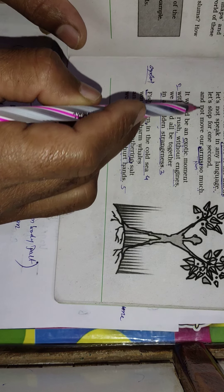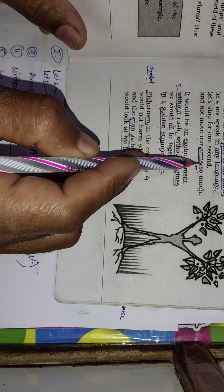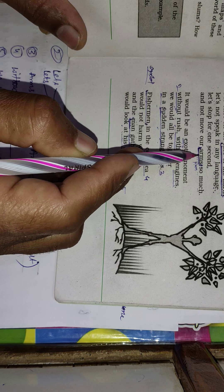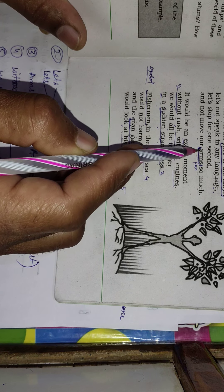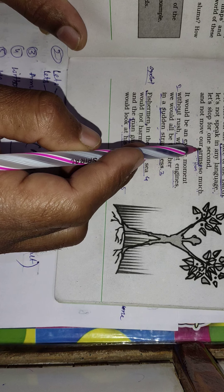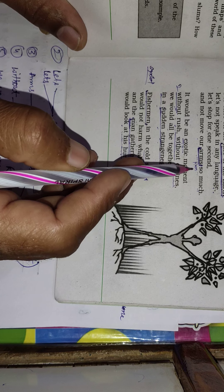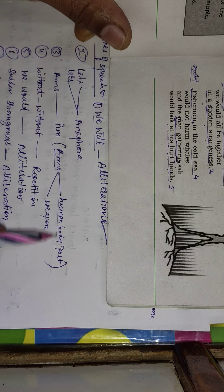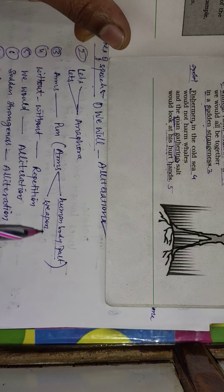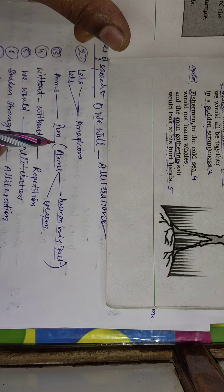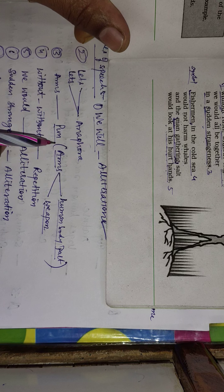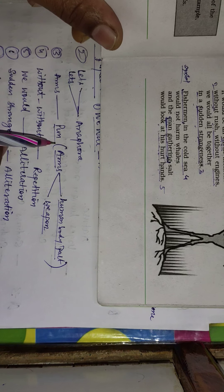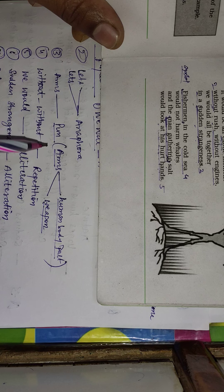There is a word 'arms' used — 'and not move our arms so much.' Arms here carries two meanings: first, the part of the human body, and second, arms and ammunition — the weapon system used in fighting a war. So arms stands for two meanings: a human body part and a weapon. Whenever a word confers two meanings, it is known as pun, P-U-N.